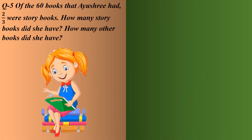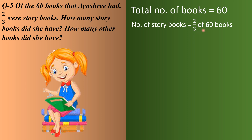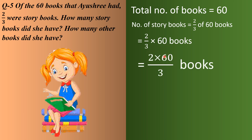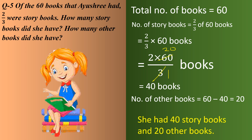Next word problem: Of the 60 books that Ayeshree had, 2/3 were story books. How many story books did she have, and how many other books? Total books are 60. Number of story books equals 2/3 of 60. Replacing 'of' with multiply: 2/3 multiplied by 60. Simplifying, 3 divides into 60 giving 20, so 2 times 20 equals 40 story books. Other books: 60 minus 40 equals 20. She had 40 story books and 20 other books.